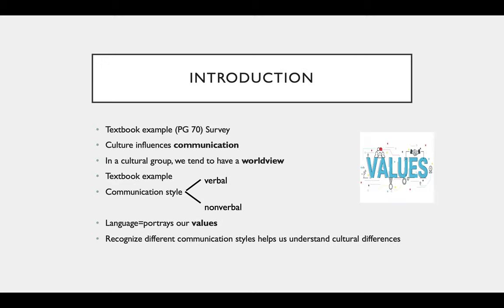There is an introduction on page 70 of Theme 2. The survey asks what values you would choose within your culture. The top three values identified were accountability, honesty, and respect. Participants were asked to select 10 values and behaviors they'd like to see in the nation. We're going to continue into our theory, noting that culture does influence our communication.